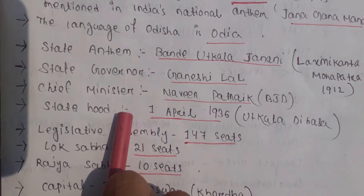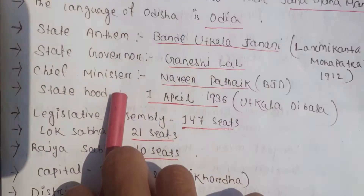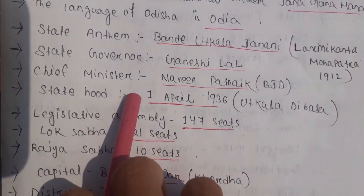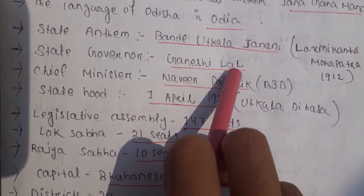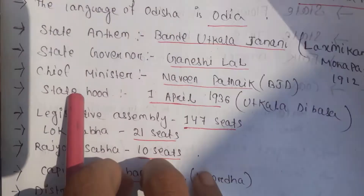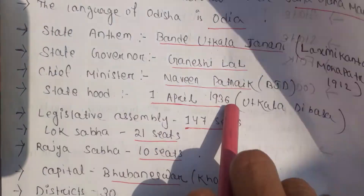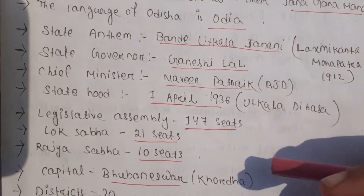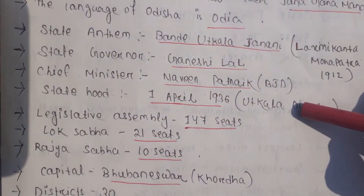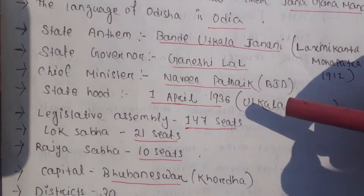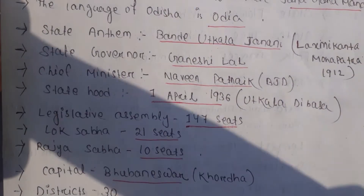The State Governor is Ganeshi Lal Ji and the Chief Minister of Odisha is Navin Patnaik Ji, from the BJD political party.